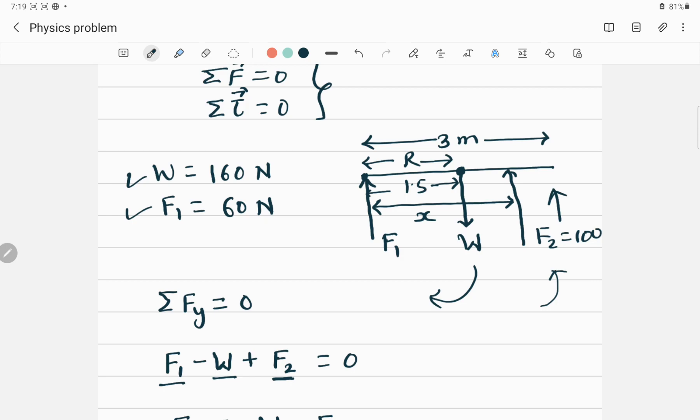This F2 should be 100 Newton. And the distance, this distance that we call x here should be 2.40 meter. So this is the distance 2.40 meter.